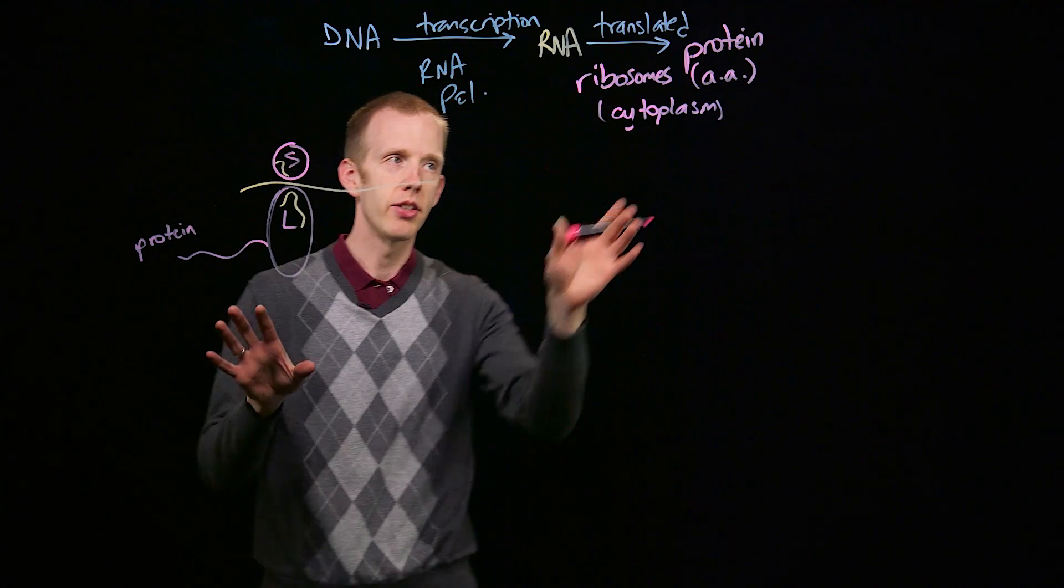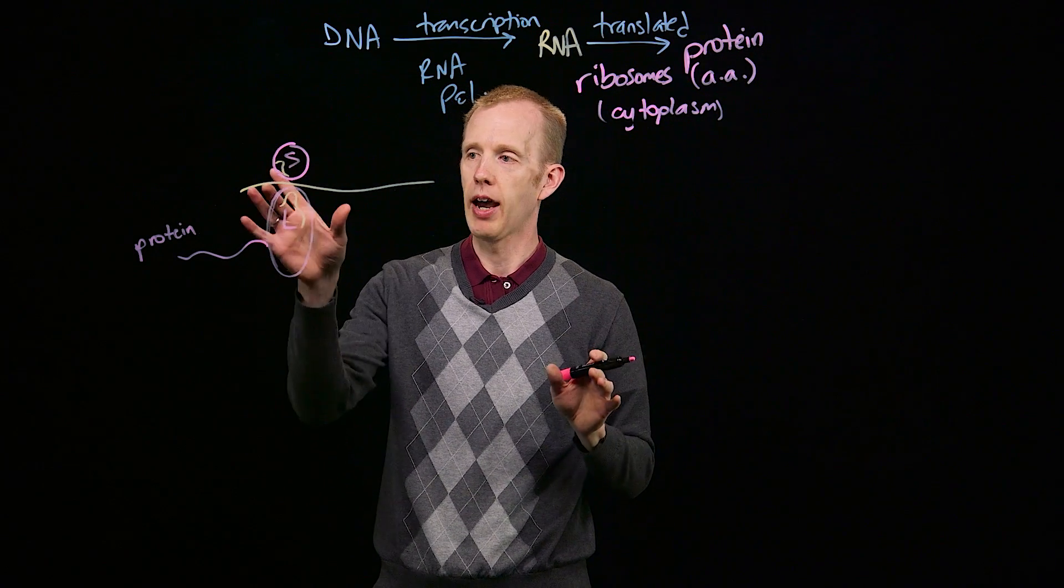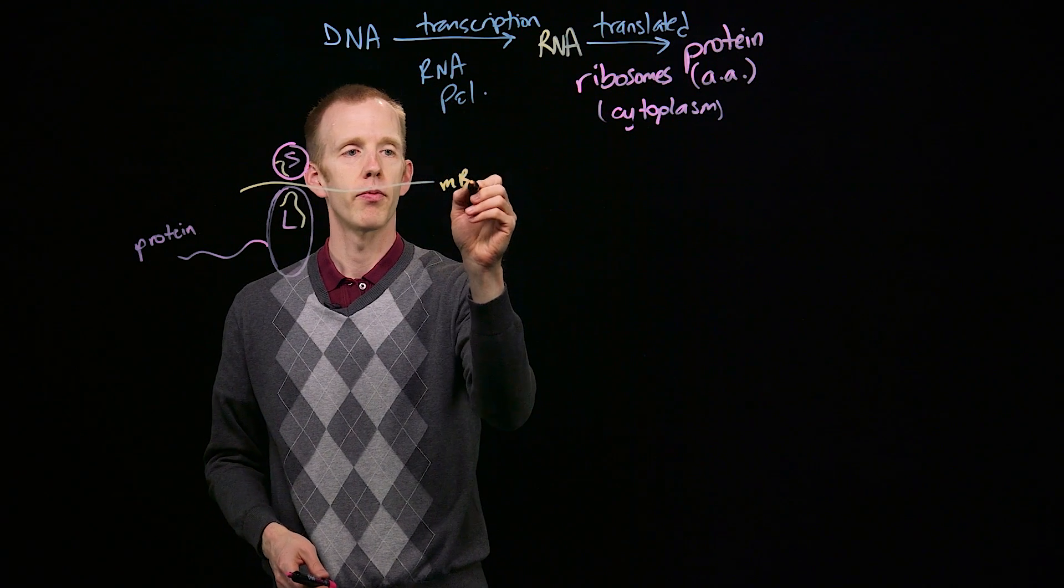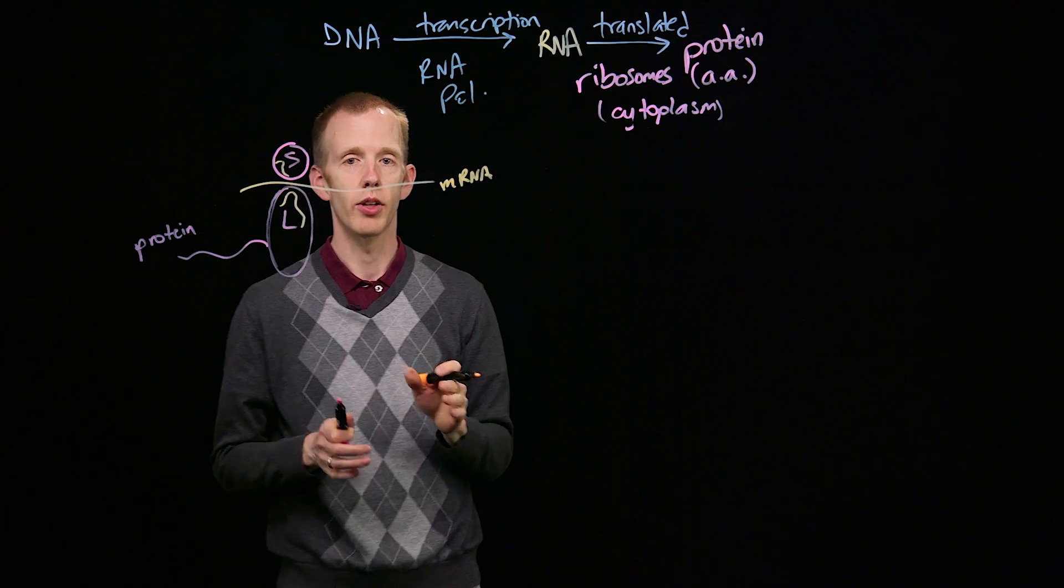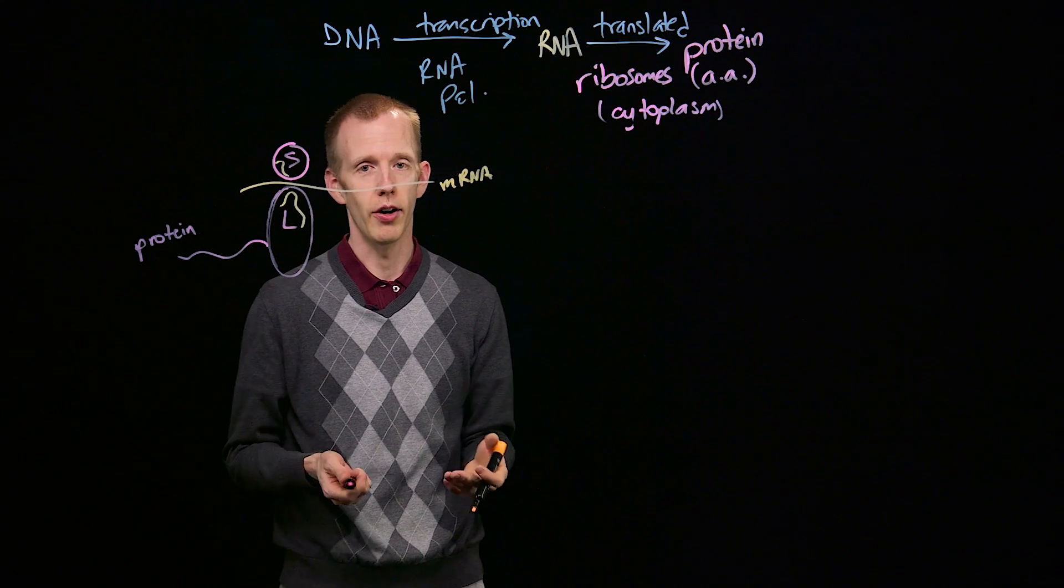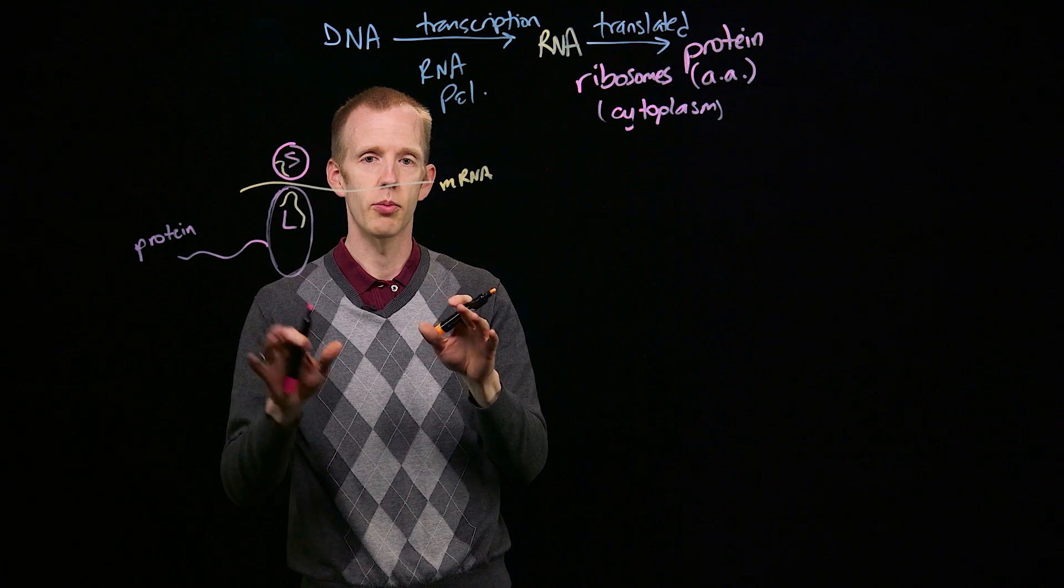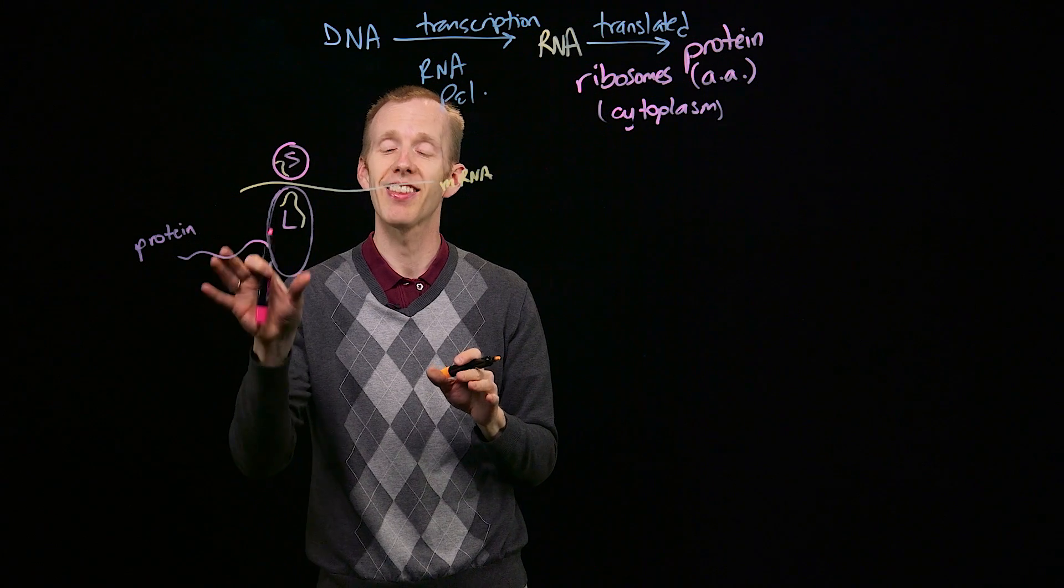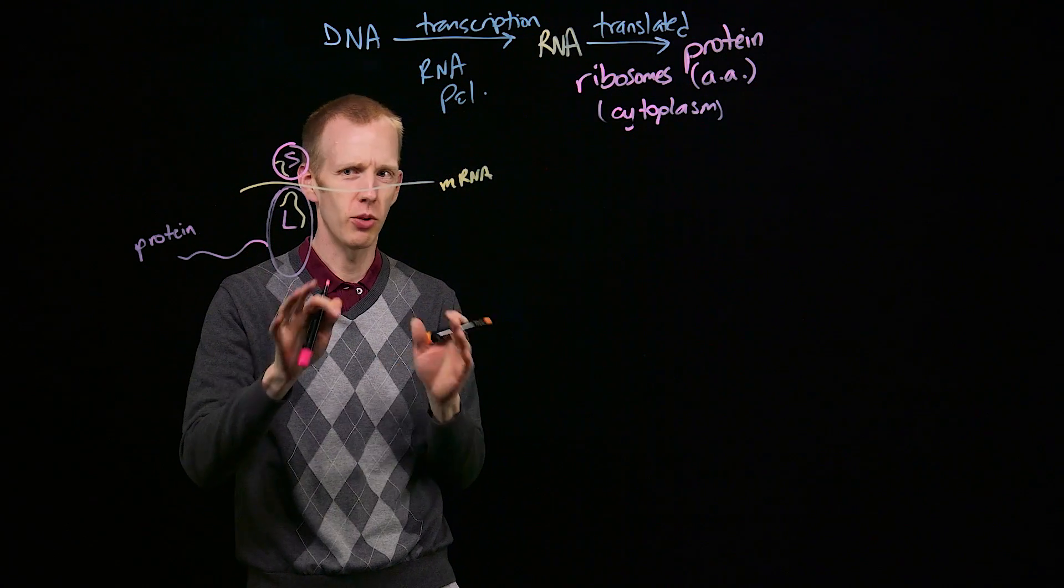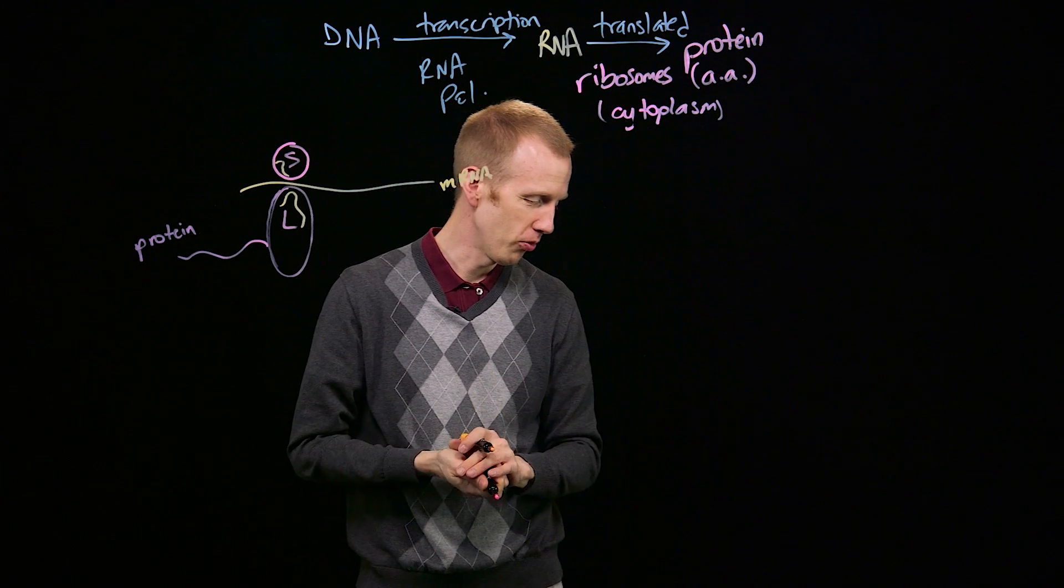And this is all taking place in the cytoplasm. After this transcript, the messenger RNA molecule exits the nucleus in a eukaryote after processing, or in a prokaryote there is no nucleus, so transcription happens and translation can occur at the same time that RNA polymerase is transcribing this gene, which is crazy but very cool for prokaryotes.